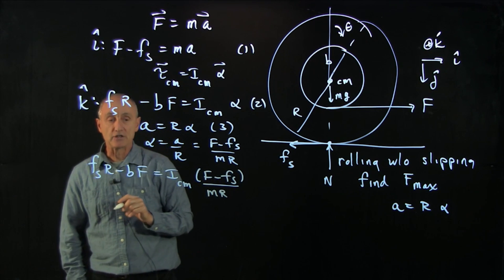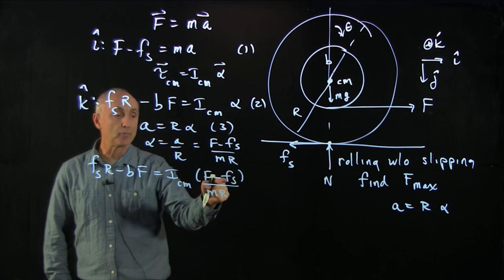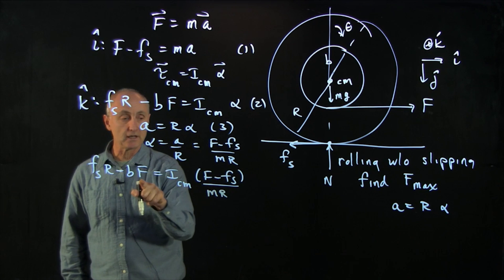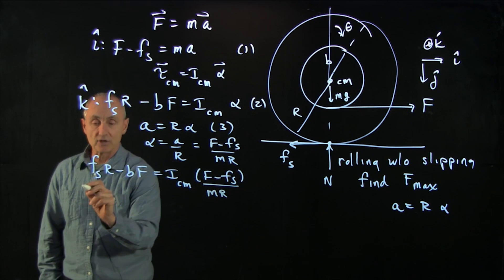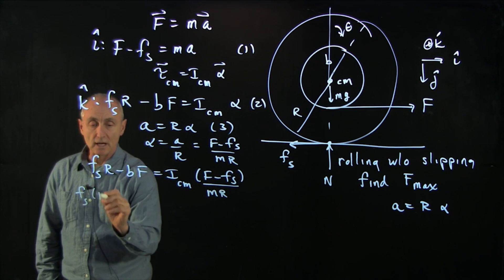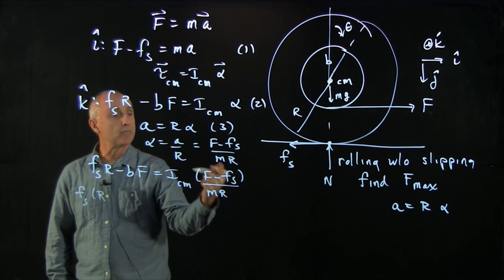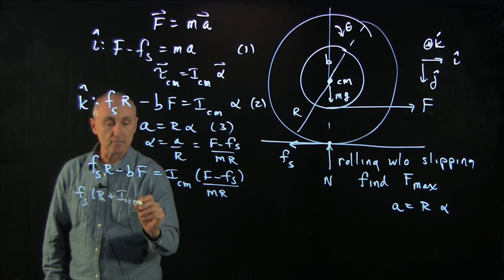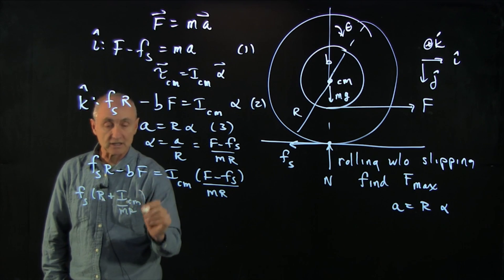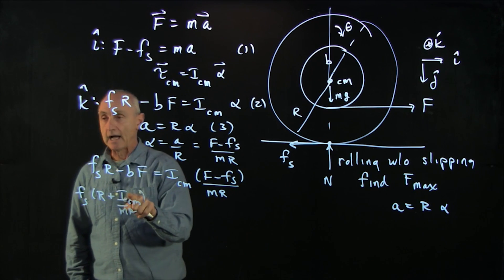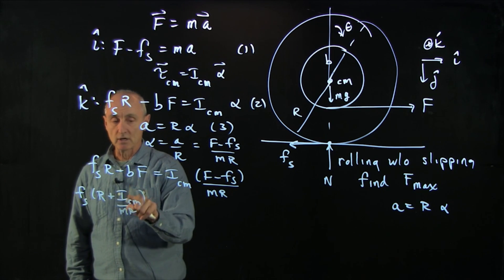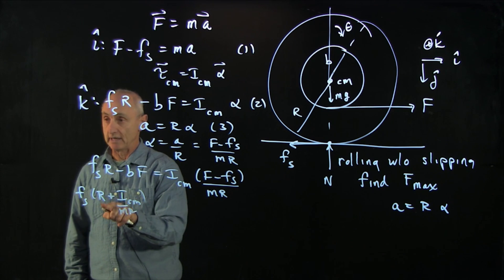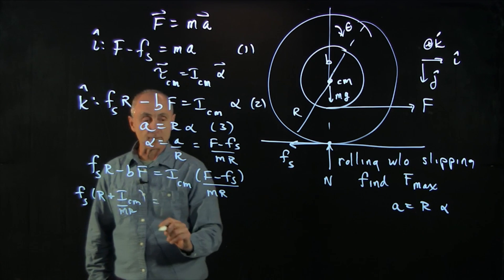And now I just need to collect terms. I'll bring the static friction term to this side and my f term to that side. And so I get fs times r. And when I bring the static friction term over to that other side, I get I cm over m r. Let's just check dimensions. I cm is m r squared. So these terms have the dimensions of length. So it looks like I'm OK.